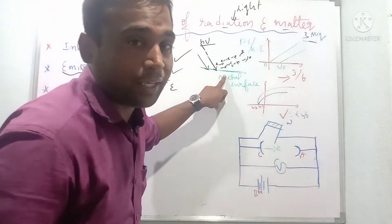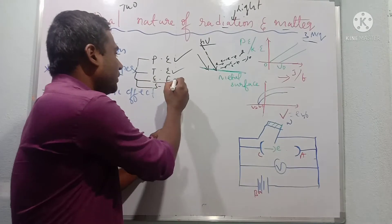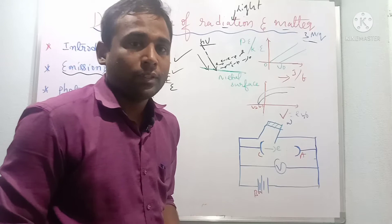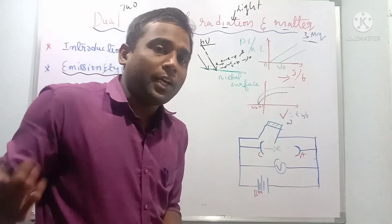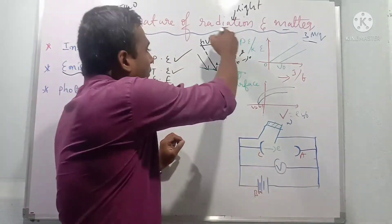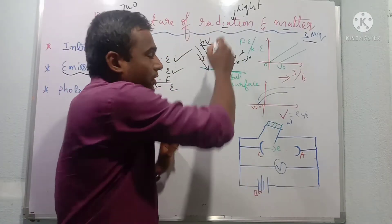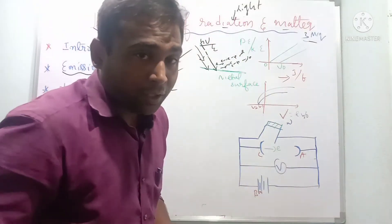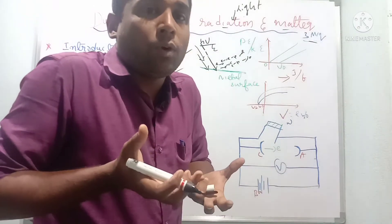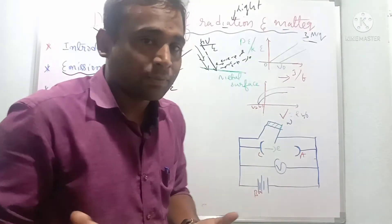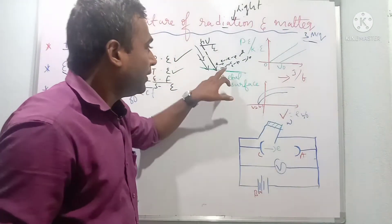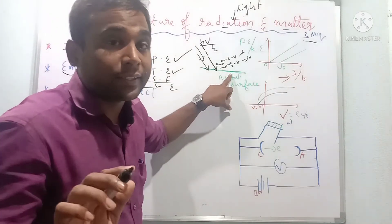Electric field emission, or field emission: when you supply an electric field to the metal surface, electrons absorb energy from the electric field and start to move out of the metal surface. This is called field emission. It also depends upon the nature of the material and the strength of the electric field.